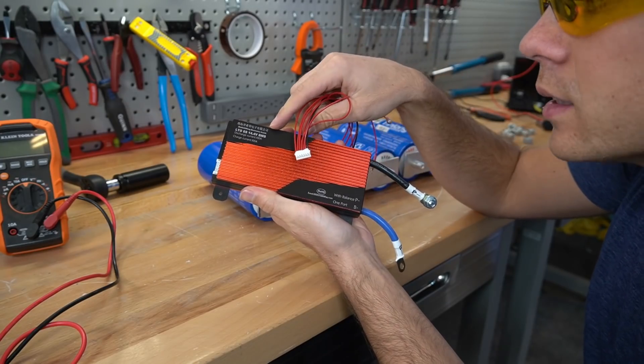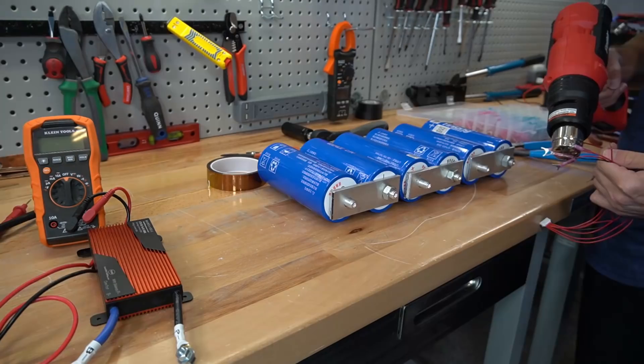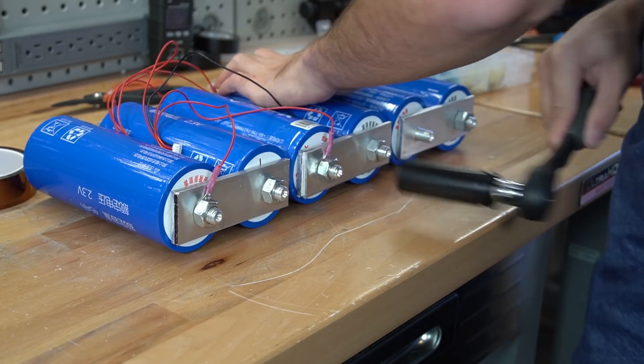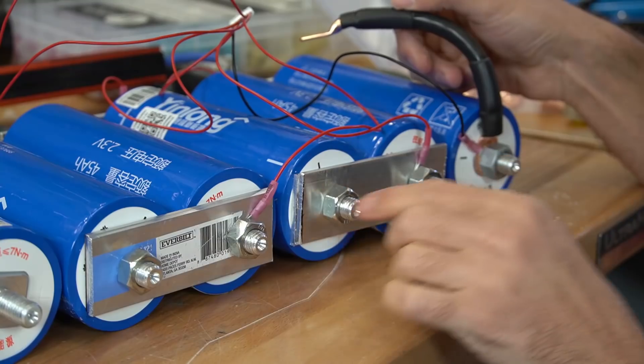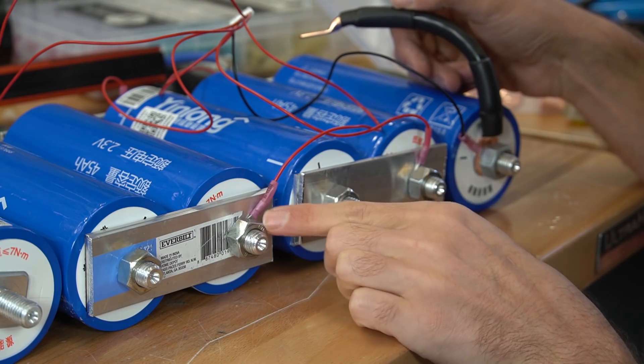We're going to use a Daly BMS and this is capable of 100 amps of charge and discharge current. By the way, there is a sticker here but there is a solid connection to the balance lead so you don't have to worry about it.